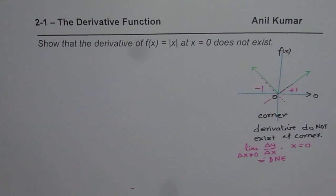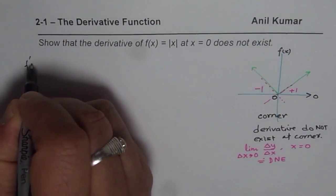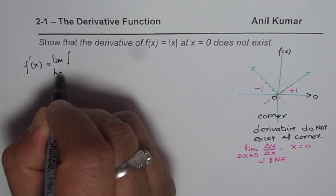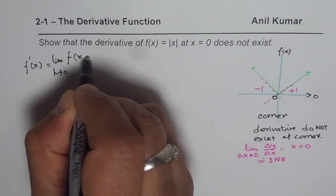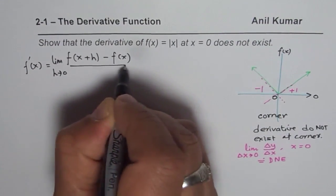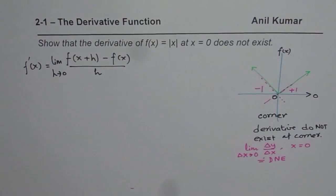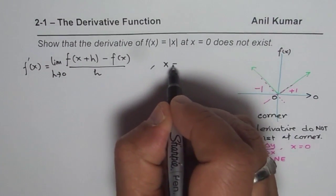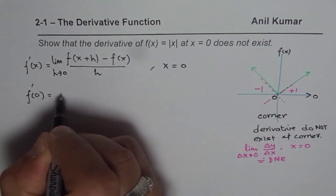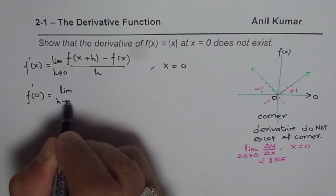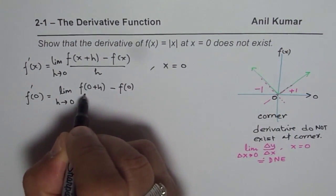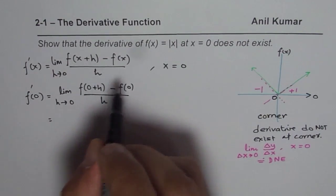Now what we will do is prove it algebraically using the definition of derivative. The derivative of a function at any point can be found by the limit as h approaches 0 of f of x plus h minus f of x, divided by h. So if the point is x equals to 0, the derivative at 0 equals the limit as h approaches 0 of f of 0 plus h minus f of 0, over h.